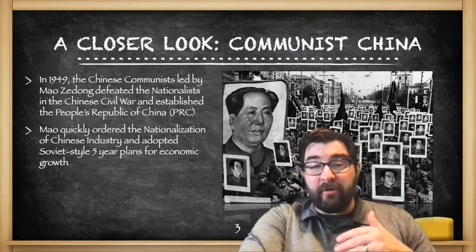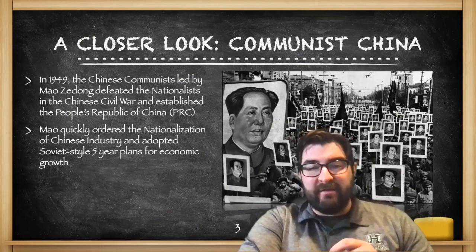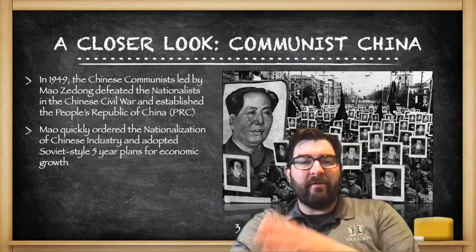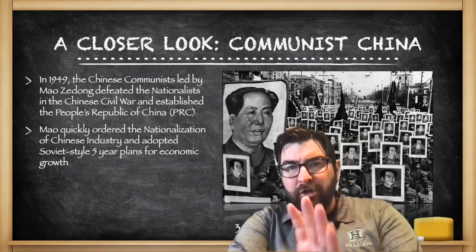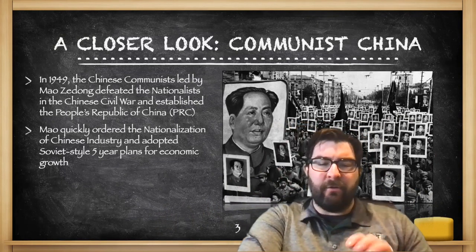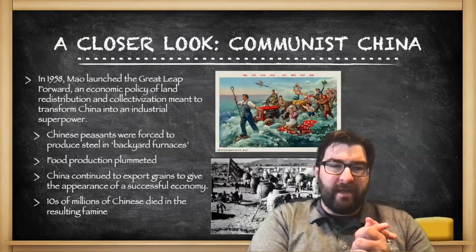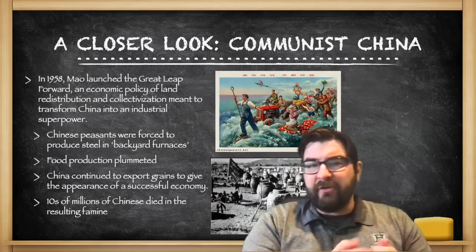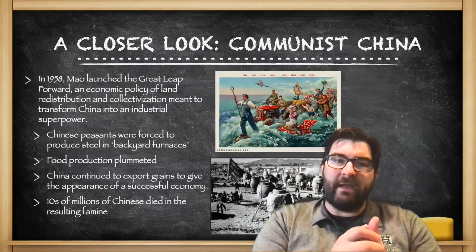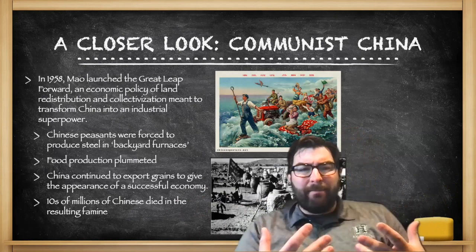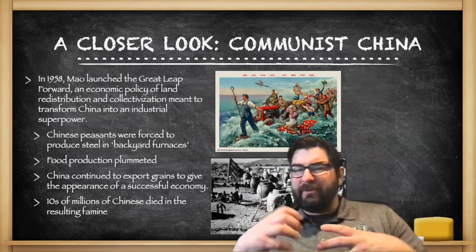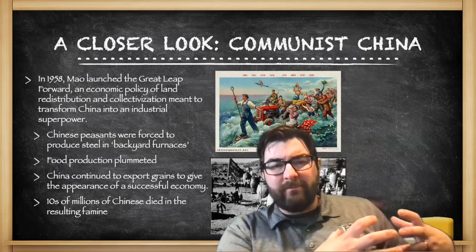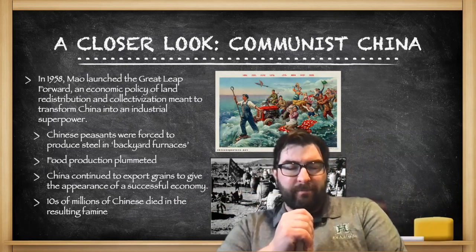Mao quickly ordered the nationalization of Chinese industries and adopted Soviet-style five-year plans to push for economic growth, especially industrial economic growth. That brings us to 1958, where Mao launched what's called the Great Leap Forward — an economic policy of land redistribution and collectivization meant to transform China into an industrial superpower.